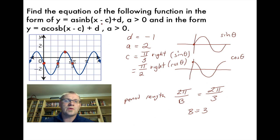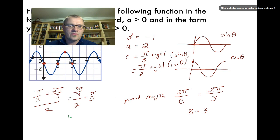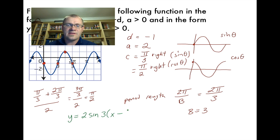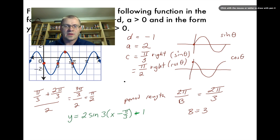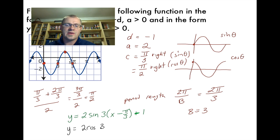Writing the two equations is straightforward — we plug in a = 2, b = 3, and d = −1. For sine: y = 2 sin(3(x − π/3)) − 1. For cosine: y = 2 cos(3(x − π/2)) − 1.